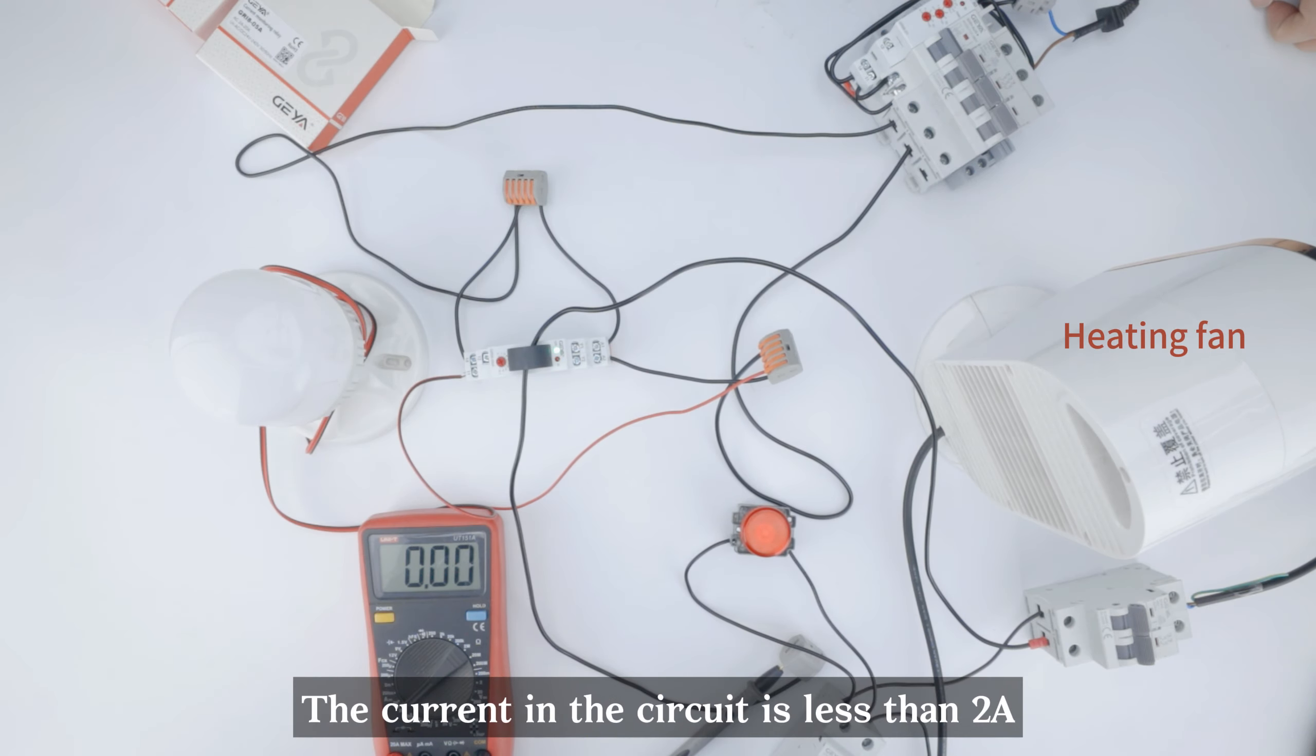Turn off the heater. The current in the circuit is less than 2A. Light bulb extinguished.